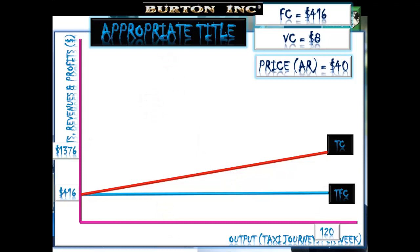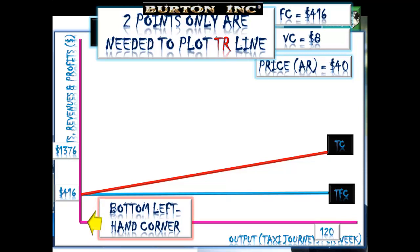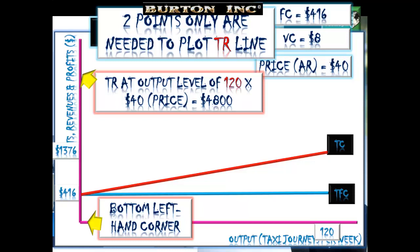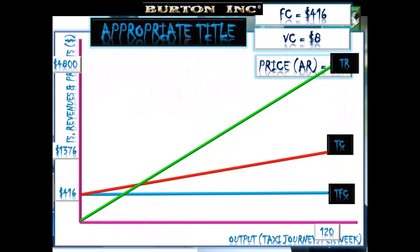Two cost curves done — one to go: total revenue. Only two points are needed to plot the total revenue line. Bottom left-hand corner is always the starting point for total revenue — if we sell nothing we get $0 in revenue, so start at the origin. Then at 120 taxi journeys: 120 × $40 = $4,800. Plot the two points, put your ruler on, draw a nice straight ruled line, label it total revenue.